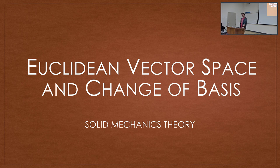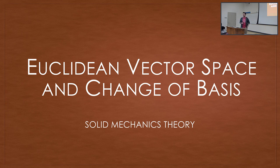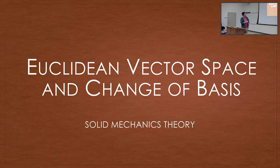We're going to jump into more mathematical stuff. I promise you this course will get better — this is the boring part before we can start applying it. Today's lecture, we're going to look at two different things: the first is a Euclidean vector space, and the second is change of basis. The first one sounds like a pile of garbage, but it's something you guys have all seen before — you know your standard x, y, z coordinate system? That's Euclidean vector space.